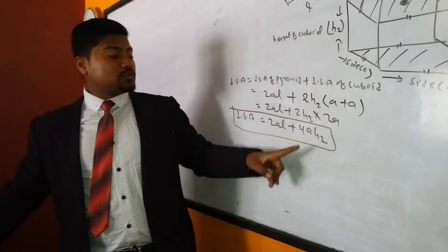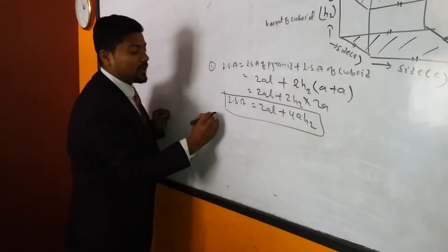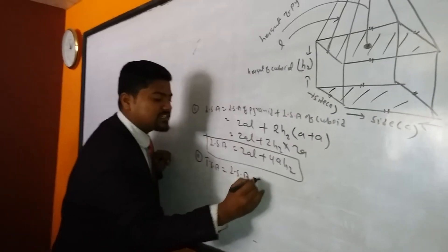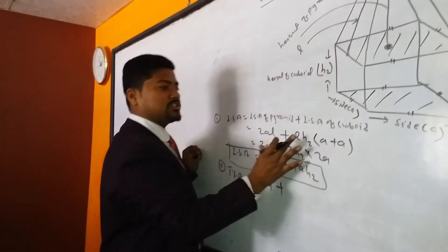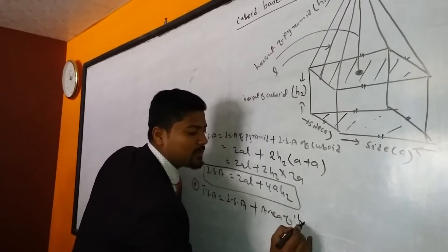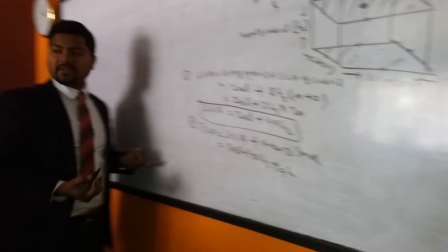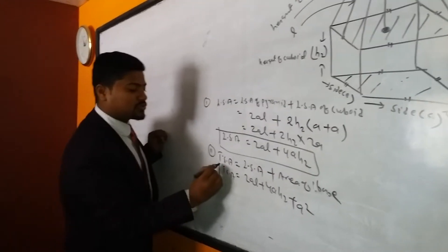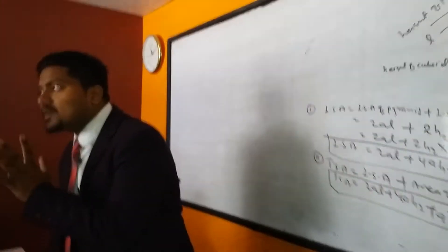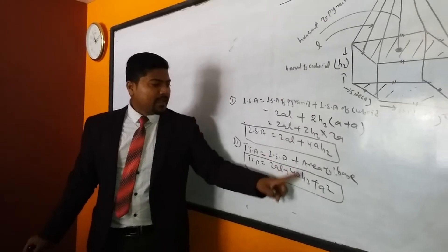So: LSA of cuboid-based pyramid = 2aL + 4aS2, where S2 = height of cuboid, L = slant height, and a = side. For Total Surface Area (TSA), we take LSA and add the base area. TSA = LSA + area of base = 2aL + 4aS2 + a². So TSA = 2aL + 4aS2 + a².